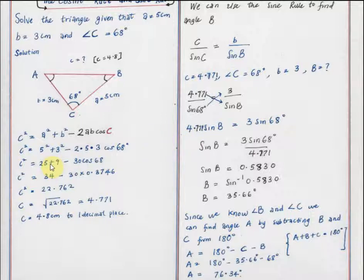So let's go ahead and put in what we have. C² equals 5² plus 3² minus 2 times 5 times 3 cos 68 degrees. So C will be equal to the square root of this, which equals 4.771. And we can approximate that to 4.8 centimeters to one decimal place.